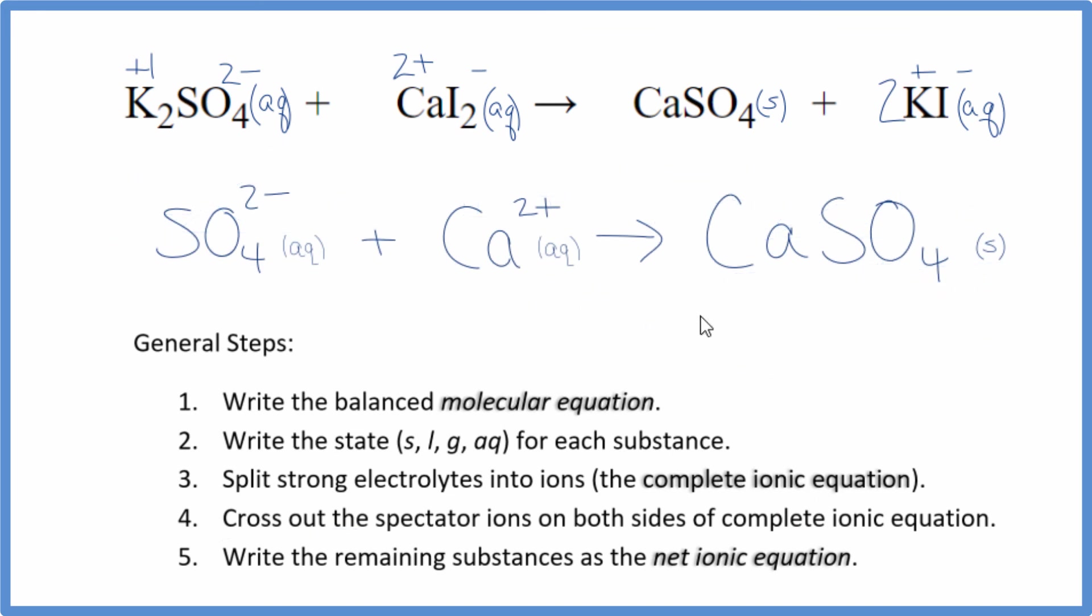And this is the balanced net ionic equation for K2SO4 plus CaI2. You'll note that charge is conserved. We have 2 minus 2 plus. That gives us a net charge of 0 here. This is neutral, net charge of 0. And the atoms, they balance as well.